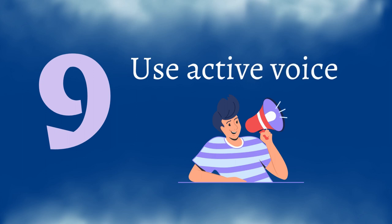Number nine: use active voice. Active voice is more engaging than passive. For instance, instead of saying 'there was a limbo contest,' you could say 'I'm in round three of the limbo contest.' Find a way to make your voice active instead of passive.